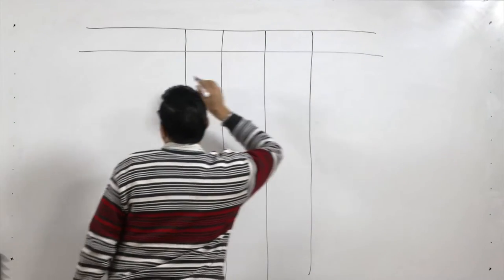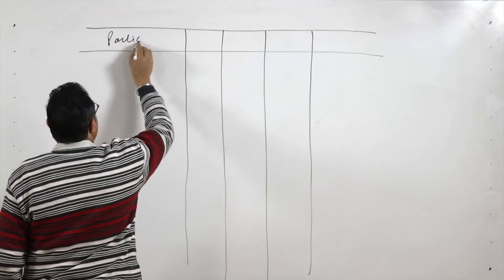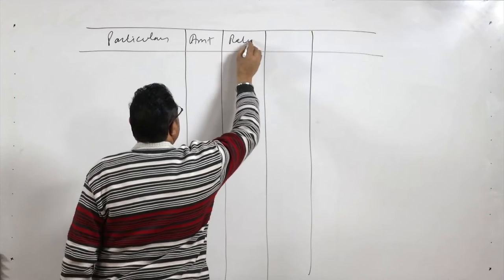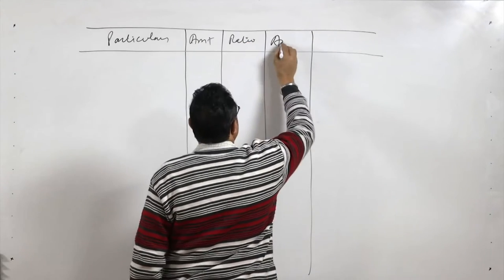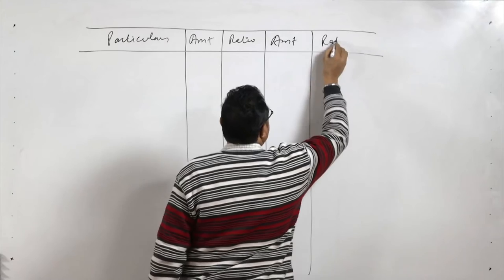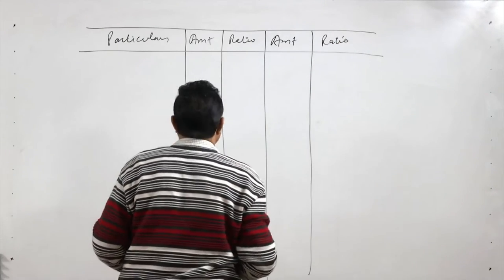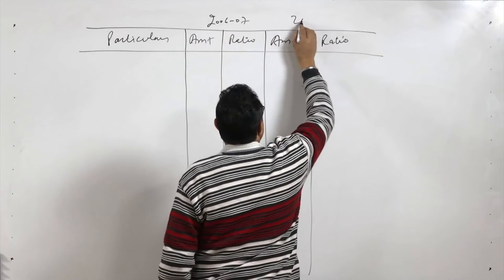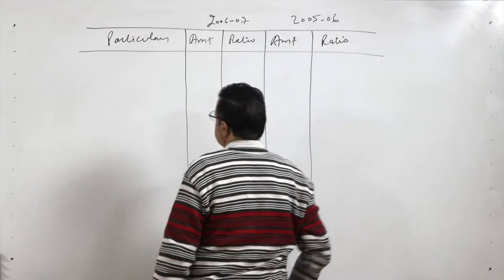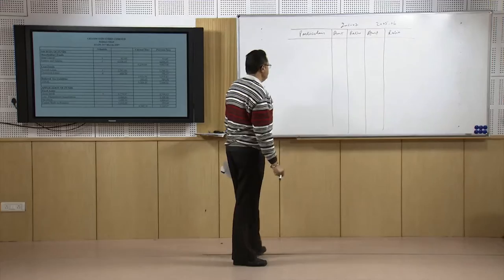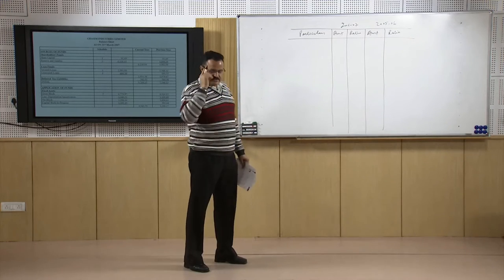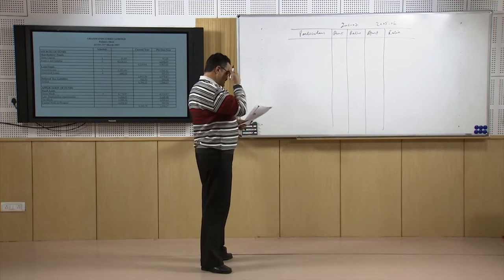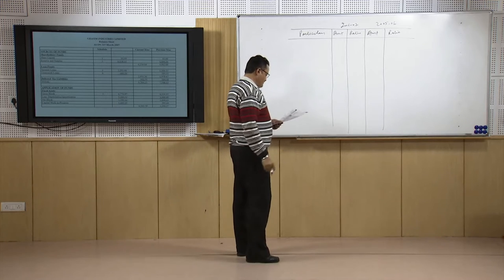We set up the multi-step income statement with columns for particulars, amount, and ratio for the years 2006–2007 and 2005–2006. This statement is continuing — after calculating the GP ratio, we now see how much the other ratios are and what is the overall profitability position of the firm.